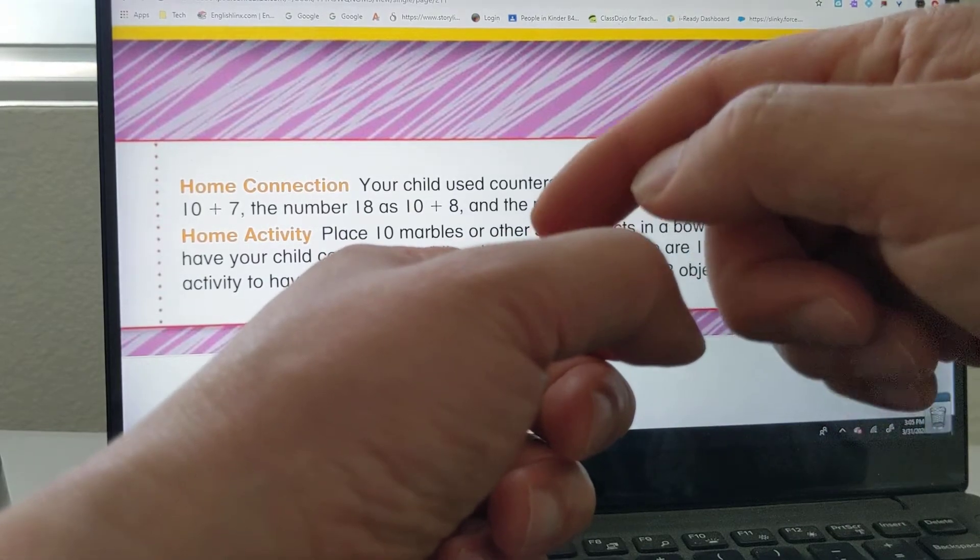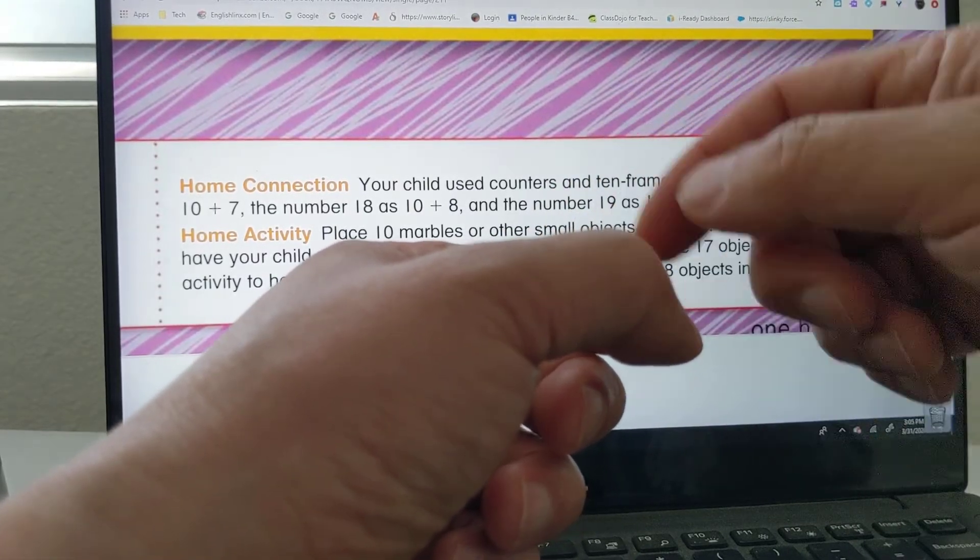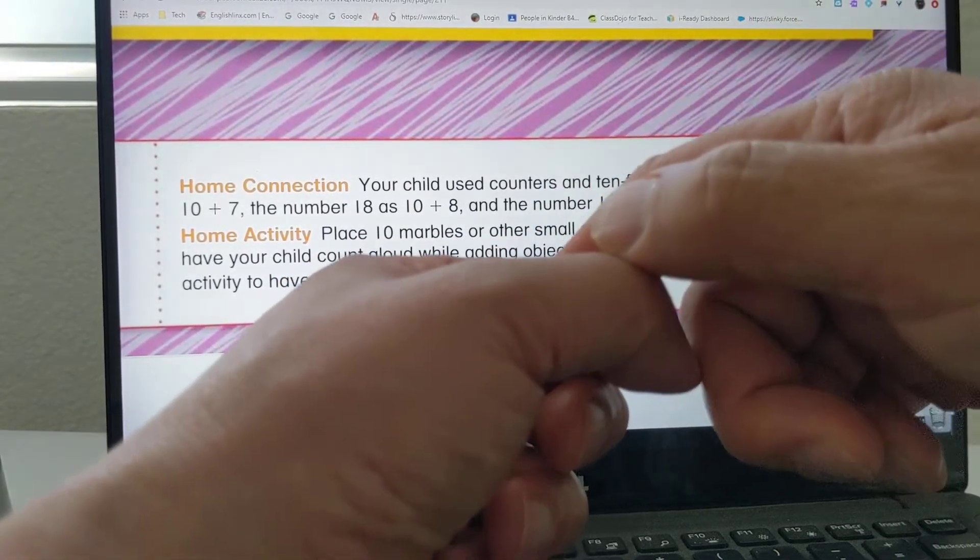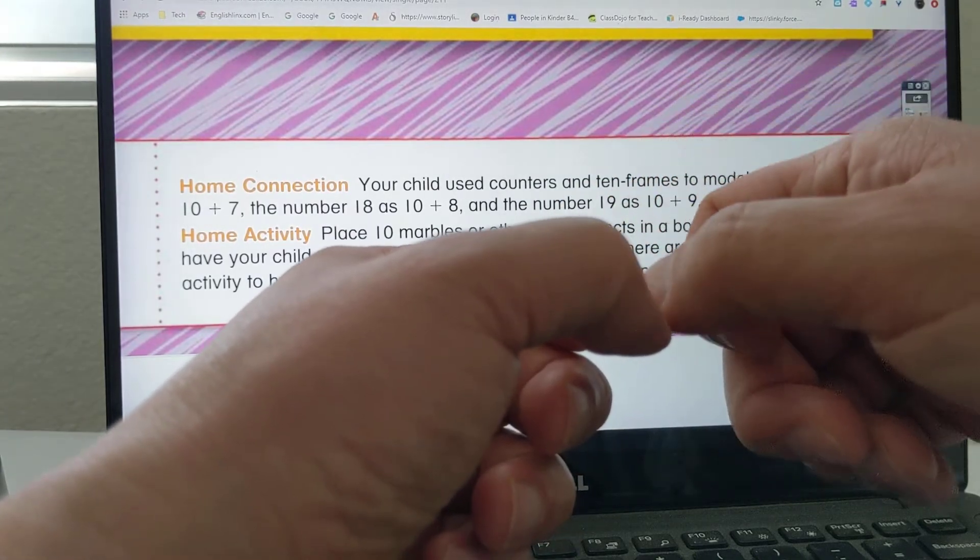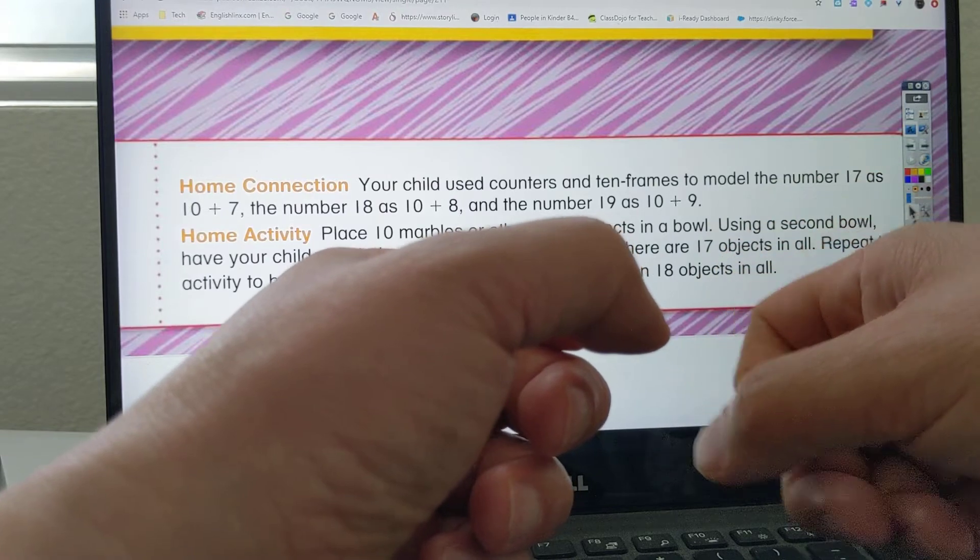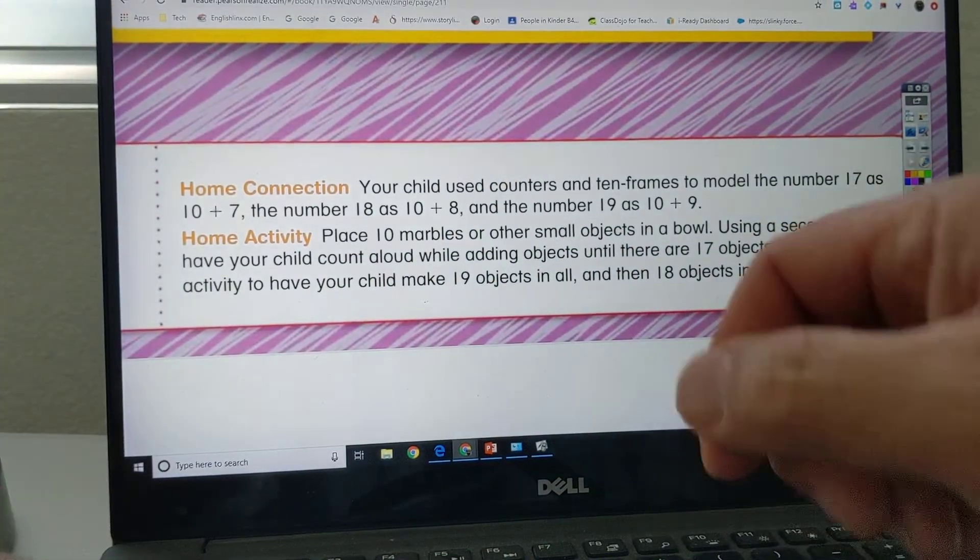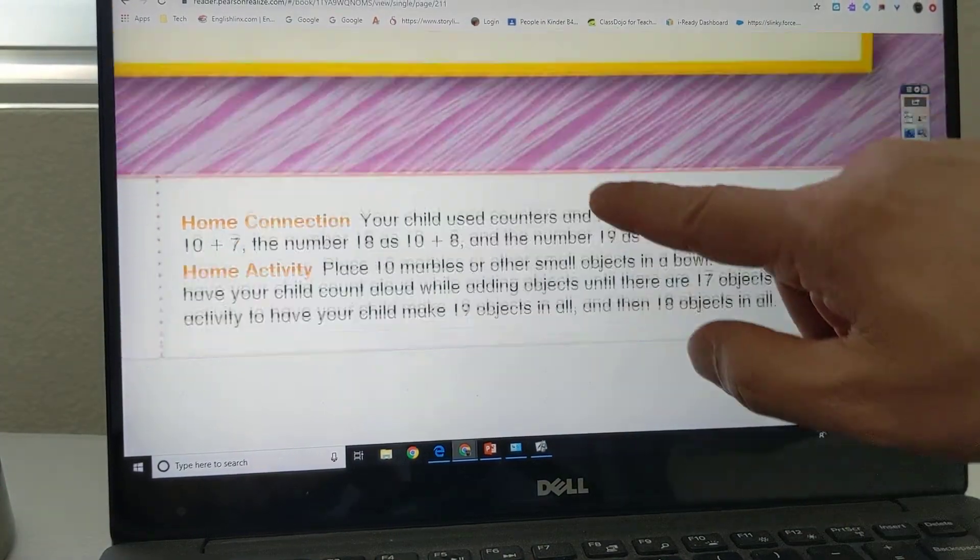Okay, so how many objects do you put in there from 10 to make 17? You have to put 7 more objects. Okay, so anyway, your parents can work with you on that one.